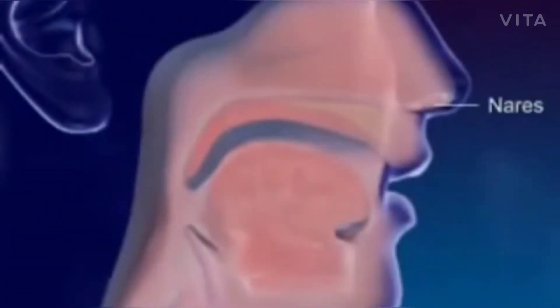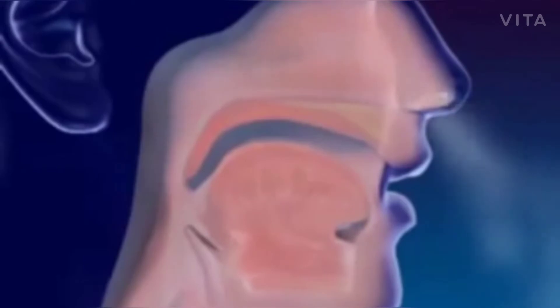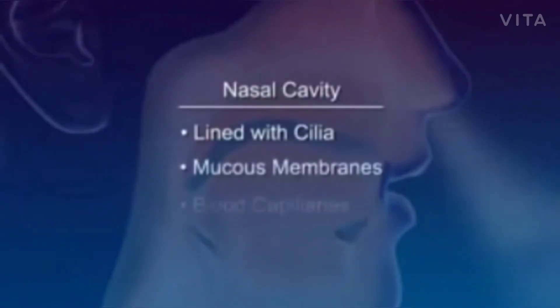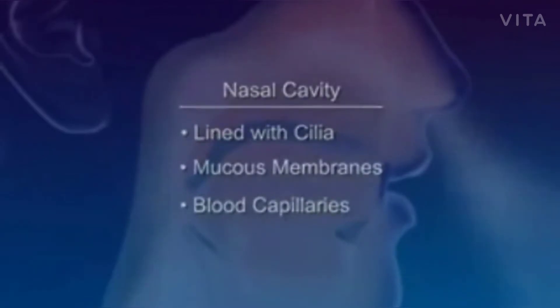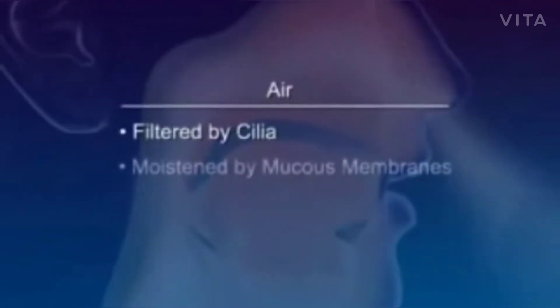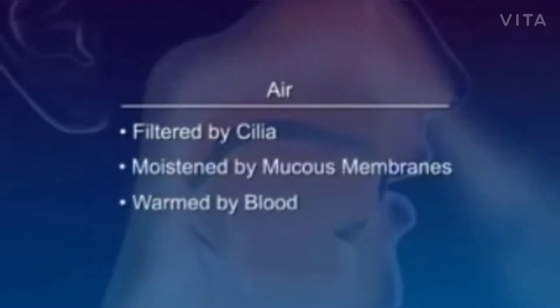Nairs are the openings to the nose. The nasal cavity is lined with cilia, mucous membranes, and blood capillaries. The air is filtered by cilia, moistened by mucous membranes, and warmed by the blood.